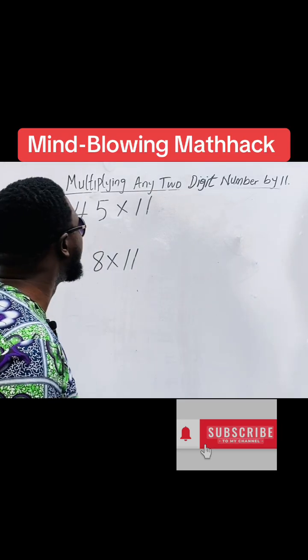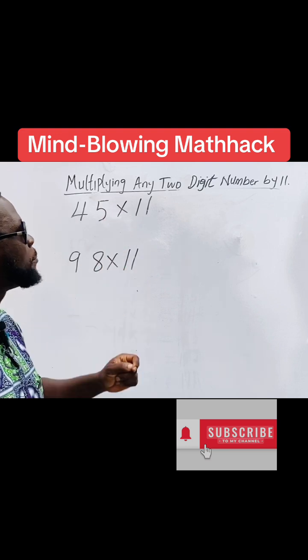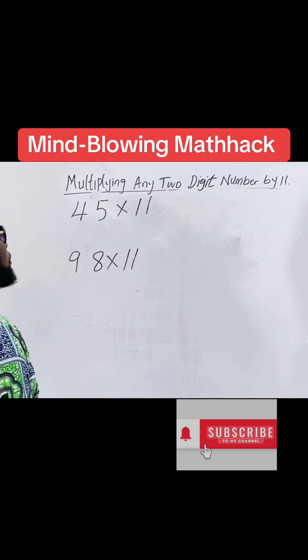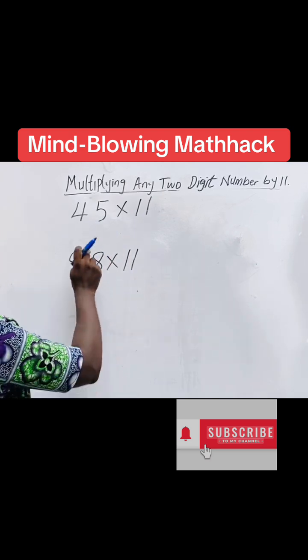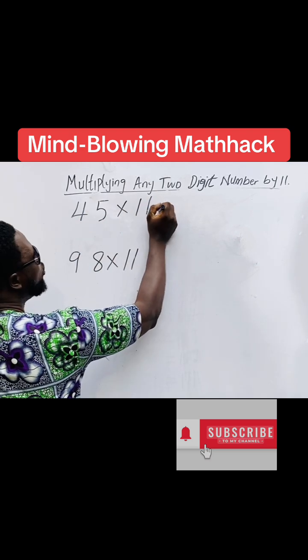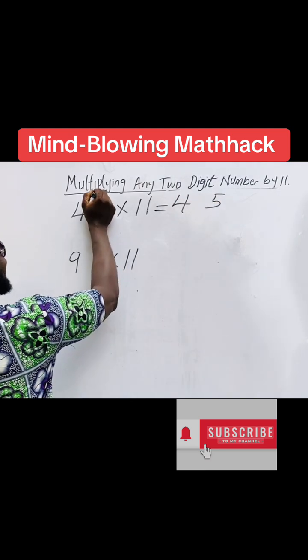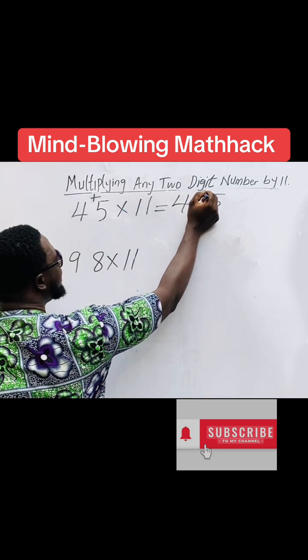Great! Let's check this multiplication of any two-digit number by 11. So let's go, 45 times 11. Write down 4 and 5, you sum the 4 and 5 to give you 9, so your solution is 4, 9, 5.